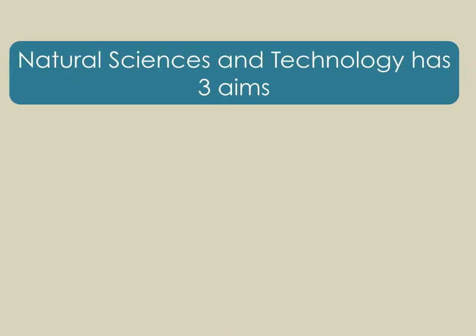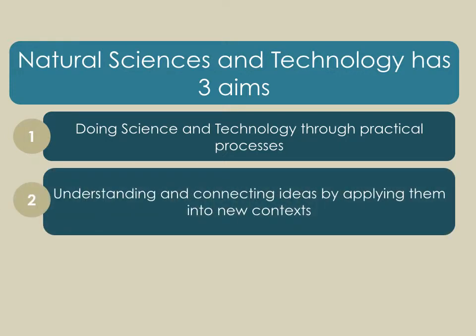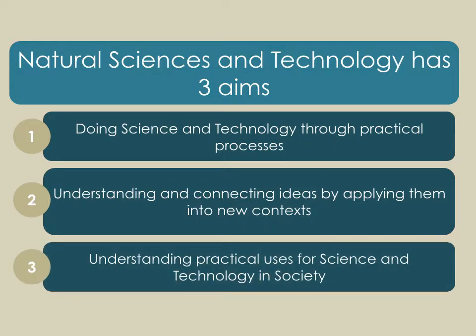There are three key aims for natural sciences and technology. The first is that doing science and technology must be done through practical processes. Learners must develop practical ability and enjoy it. They also need to understand and connect ideas and apply them in new contexts. The third and probably most important is that they need to understand how science and technology is practically used in society and why it's so important.